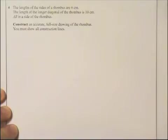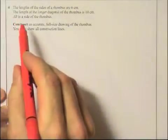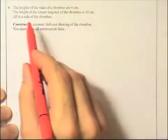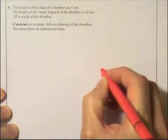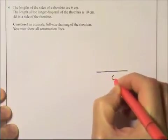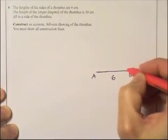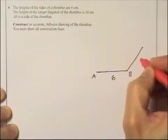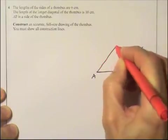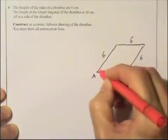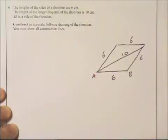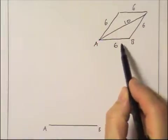Question 4 is a construction question. You construct a rhombus. Please, before you construct a rhombus or a triangle or any 2D shape, draw a sketch. The length of the sides of the rhombus are 6 centimeters. The length of the longer diagonal of the rhombus is 10 centimeters. AB is the side of the rhombus. Here is the sketch. You have AB as the side, it's 6 centimeters. All the sides are 6. So I'm going to have a side coming up here which is 6, a side coming up here which is 6, a side coming along here which is 6. The longer diagonal, that's going to be 10. That is my sketch.